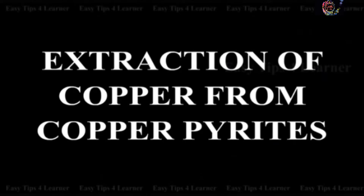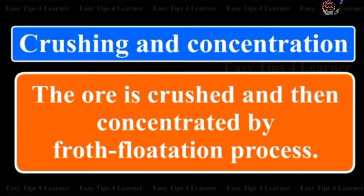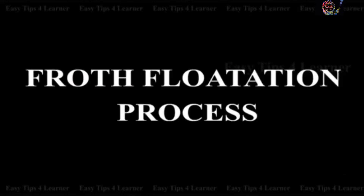Extraction of copper from copper pyrites involves the following steps. The first step is crushing and concentration: the ore is crushed and then concentrated by the froth flotation process.